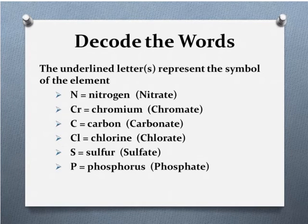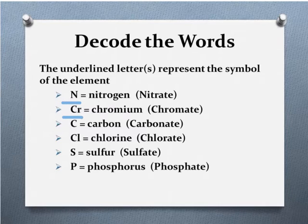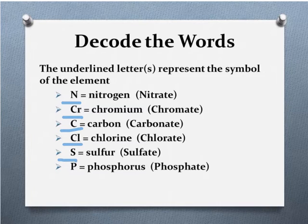The underlined letters represent the symbol of the element. So N is for nitrogen, Cr is for chromium, C is for carbon, Cl stands for chlorine, S is for sulfur, and P is for phosphorus.